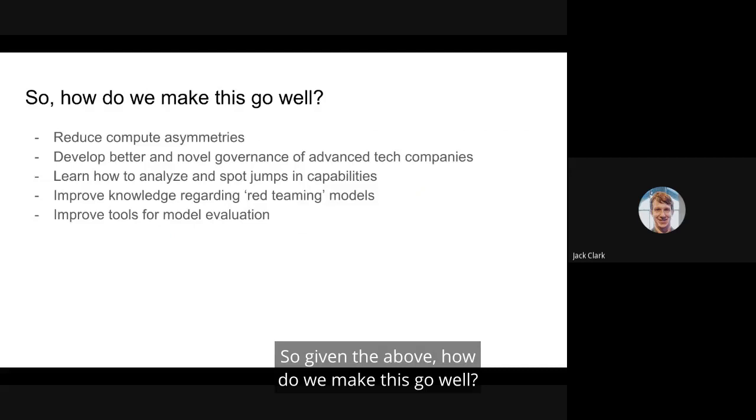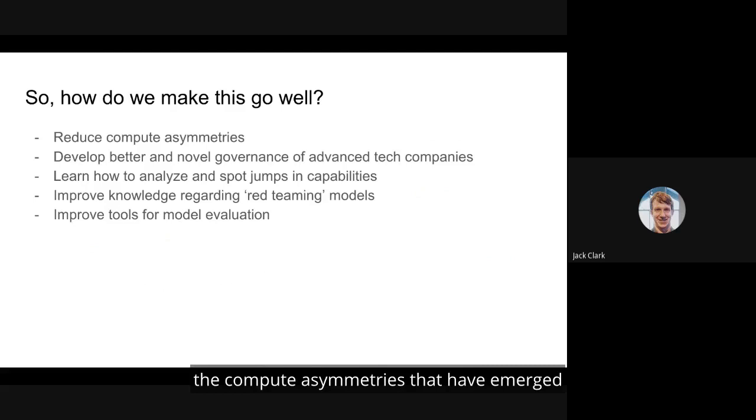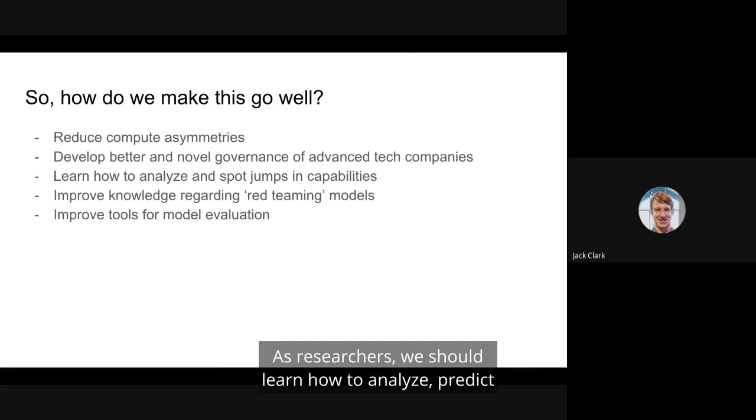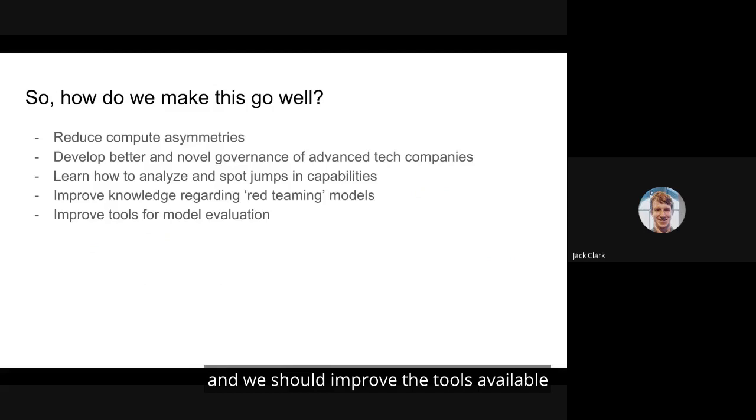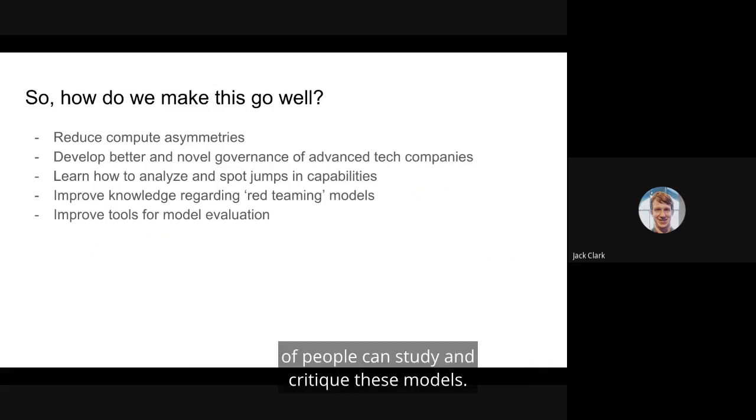So, given the above, how do we make this go well? What can we, as developers and concerned researchers, do to improve the state of things? The paper lists out some concrete recommendations. First, we should try and reduce the compute asymmetries that have emerged between industry and academia. Second, we should develop better and novel governance systems for these advanced tech companies because they are developing and deploying such large-scale models, but they should have a greater degree of accountability. As researchers, we should learn how to analyze, predict, and spot these rapid jumps in capability as they occur, or ideally know why they occur and be able to predict them better. We should improve the state of knowledge regarding red teaming models, how to find their problems, how to find their failures, and we should improve the tools available for model evaluation, so a larger set of people can study and critique these models.